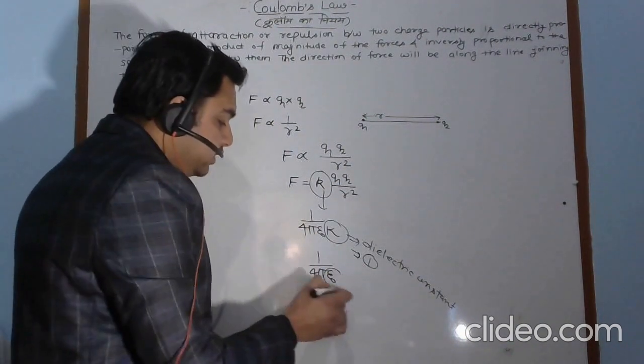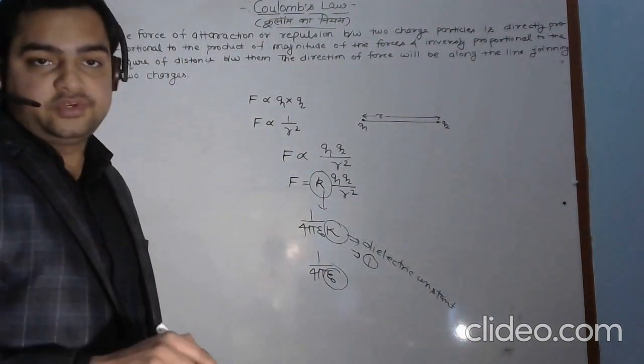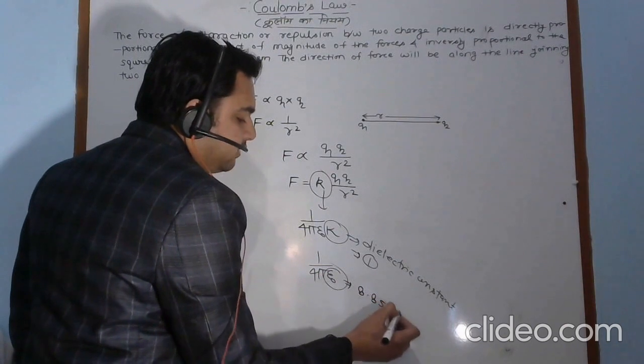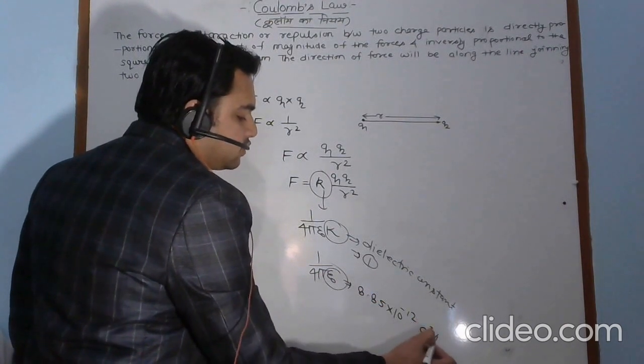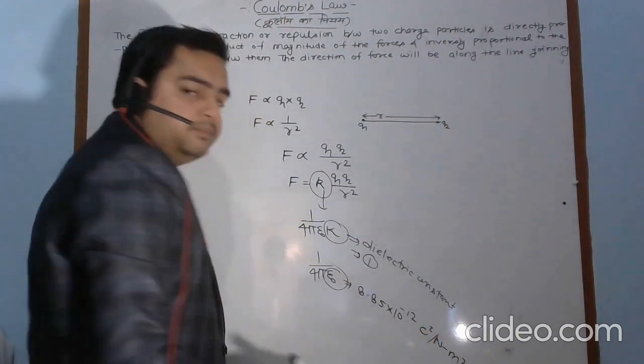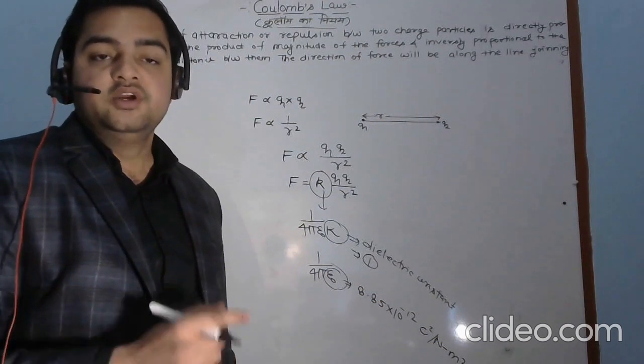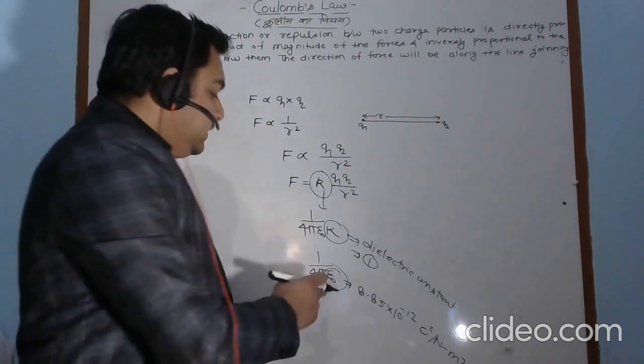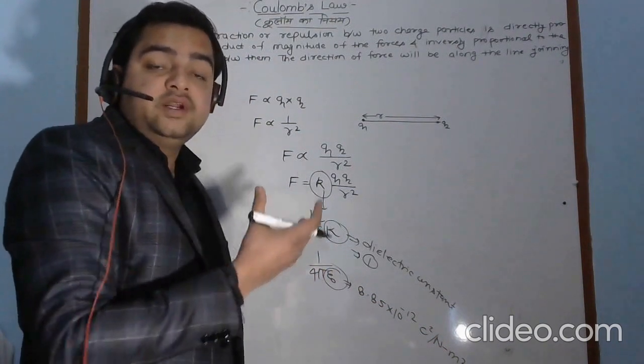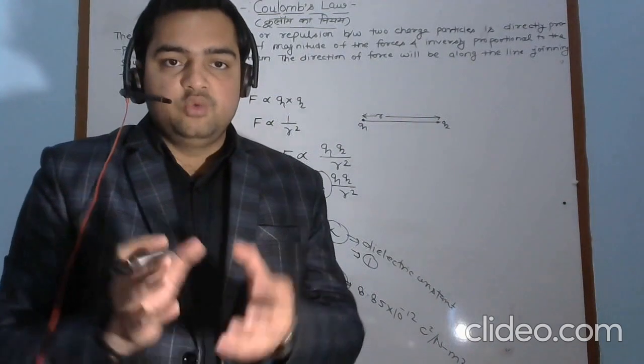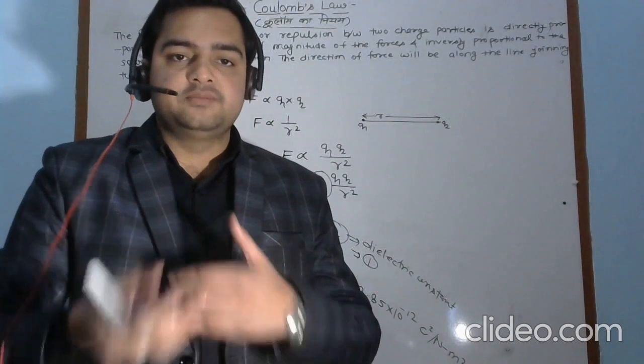This epsilon naught is called permittivity of free space. Its value is 8.85 into 10 to the power minus 12 coulomb square per newton meter square. It is a physical quantity which shows the absorptivity of the medium. How many electric field lines will the medium absorb?